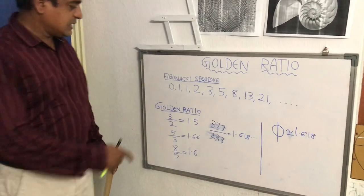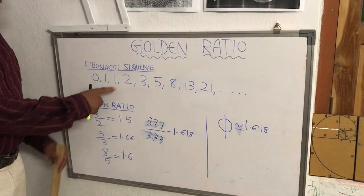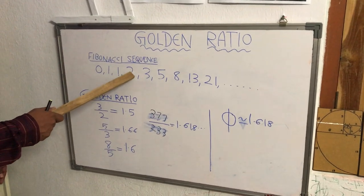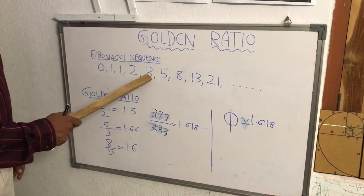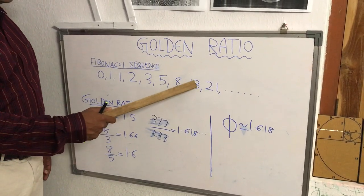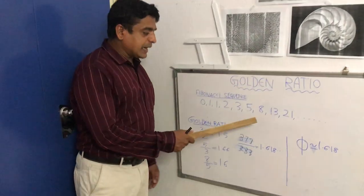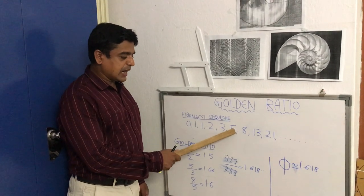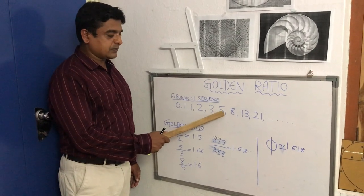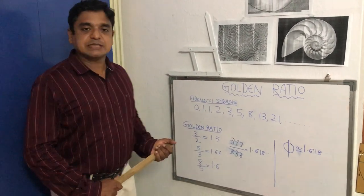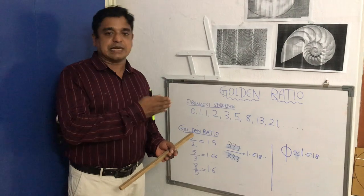This is a magical sequence. Starting with 0, then 1, then 1 plus 0 is 1, then 1 plus 1 is 2, 2 plus 1 is 3, 3 plus 2 is 5, 5 plus 3 is 8, 8 plus 5 is 13, 13 plus 8 is 21, and so on. To get a term you have to add its previous term and the term just before the previous term. The general formula is: X(n+2) = X(n+1) + X(n).